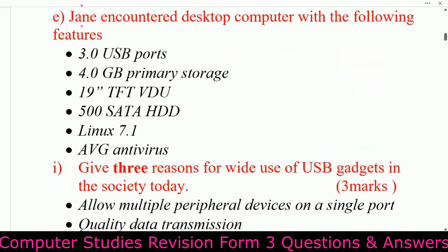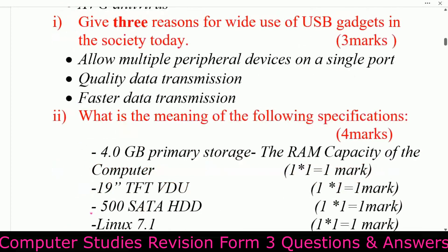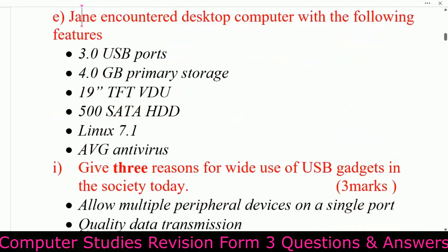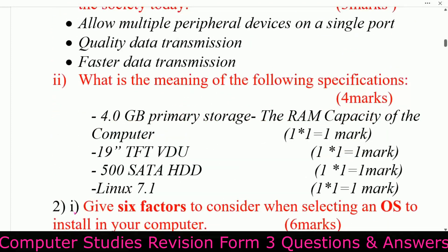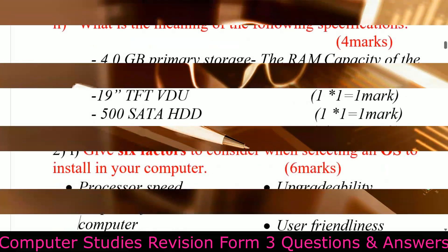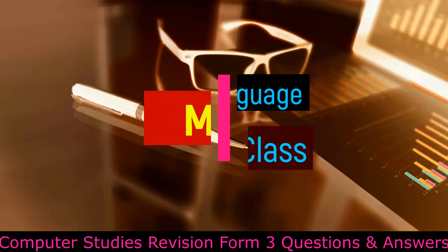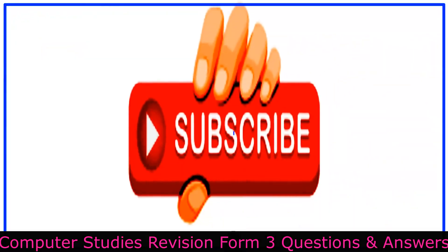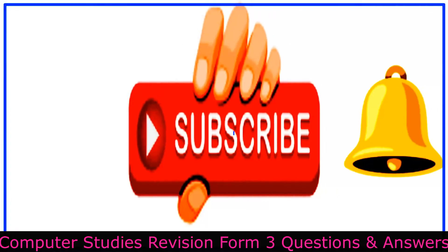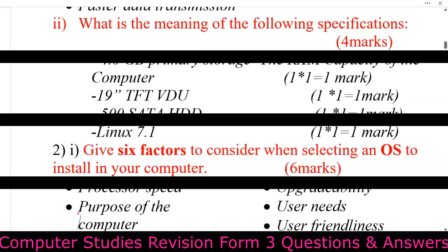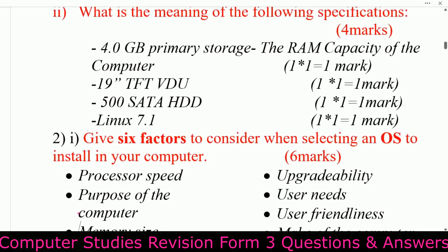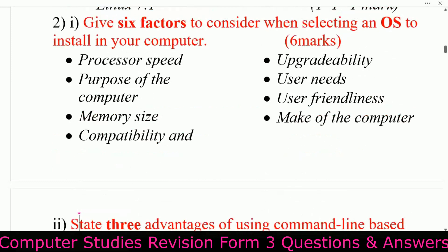Next, what is the meaning of the following specifications? 4.0 GB primary storage — that is the RAM capacity of the computer. 19-inch TFT — that refers to the monitor screen size and type. 500 GB SATA hard disk drive — that refers to the secondary storage capacity and interface type.